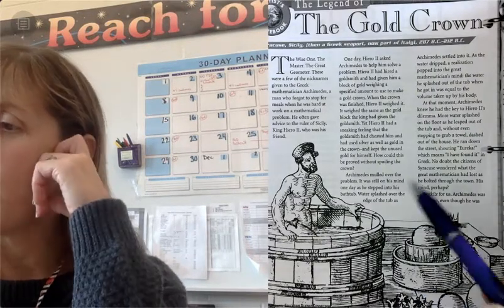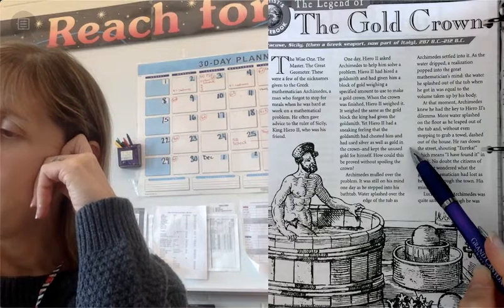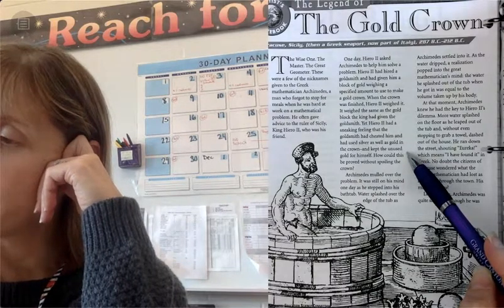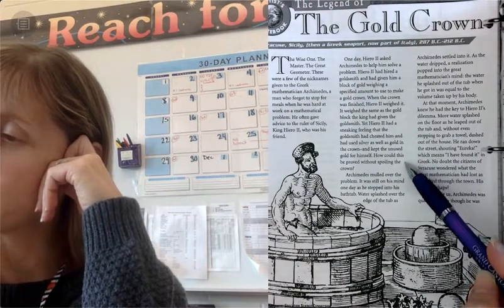And he had used silver as well as gold, like mixed them together, as well as gold in the crown. And he kept the unused gold for himself. How could this be proved without spoiling the crown?